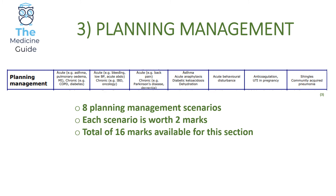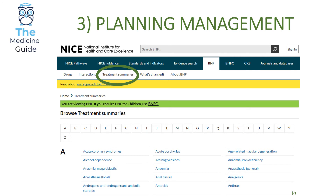The third section focuses on planning management, with 16 marks available across eight questions, each worth two marks. You'll be presented with a scenario similar to an SBA, with five possible management choices to choose from. If unsure, you have access to the BNF and can use treatment summaries to look up the management plan for a particular condition.